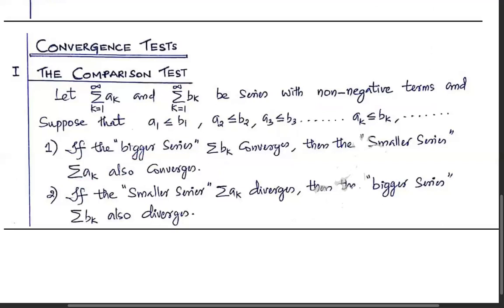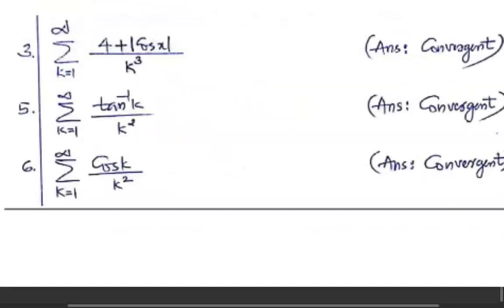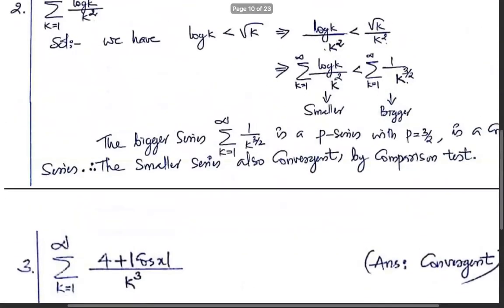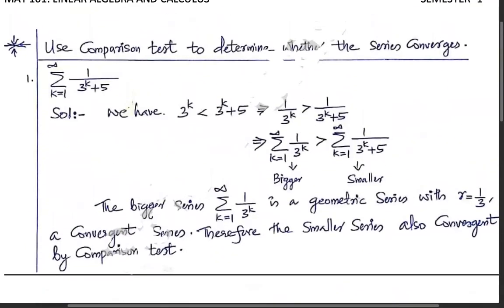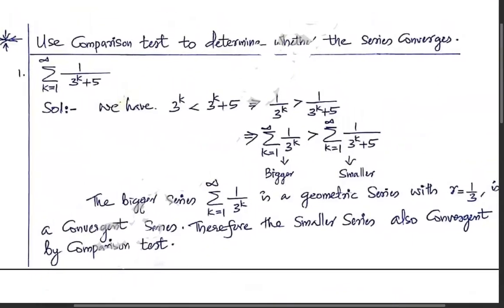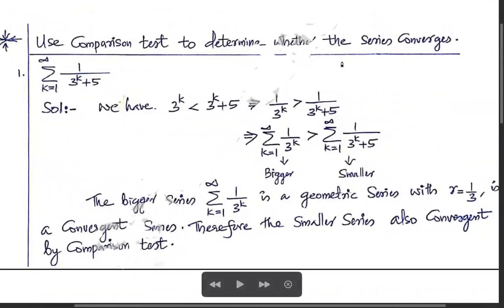Now let's move on to some exercise problems. First example: use the comparison test to determine whether the series converges or not. The series is summation from k=1 to infinity of 1 divided by (3^k + 5).